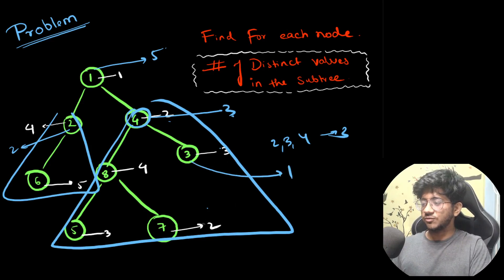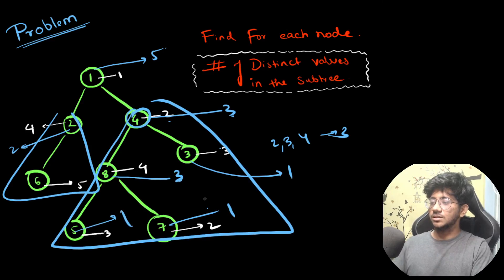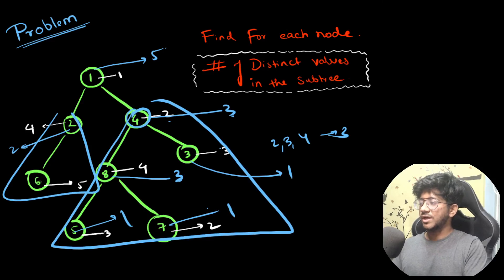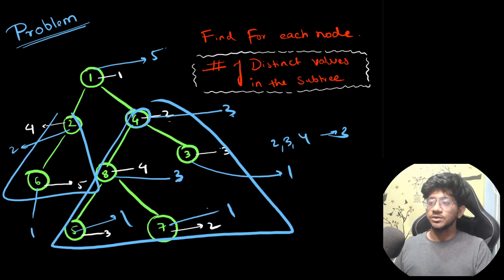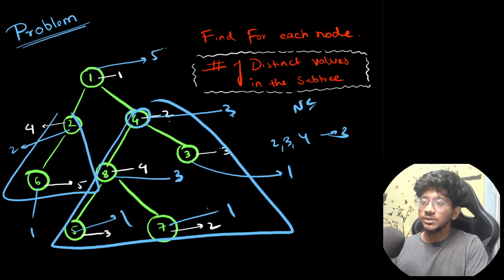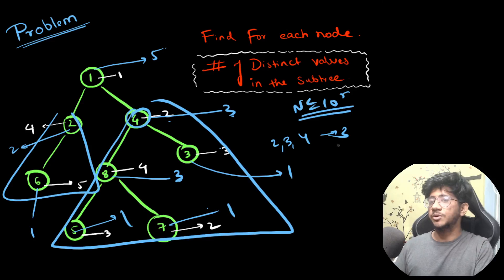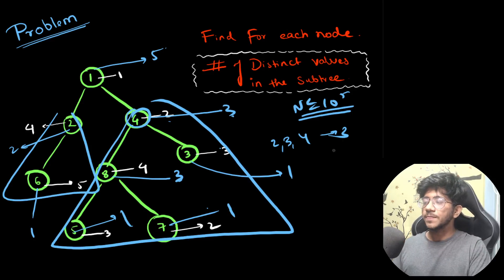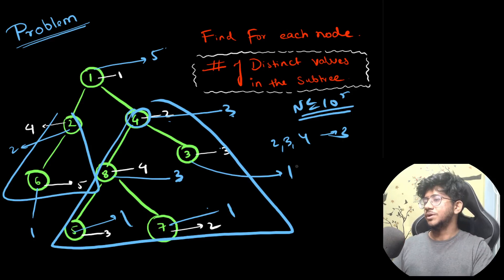For leaf nodes, the distinct count is going to be one. We can find it for every node like this, but what we need to do is handle a bigger tree where N is up to 10^5 — that is, up to 100,000 nodes. So how do we solve this particular problem efficiently?